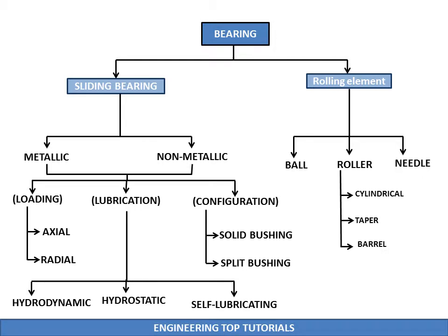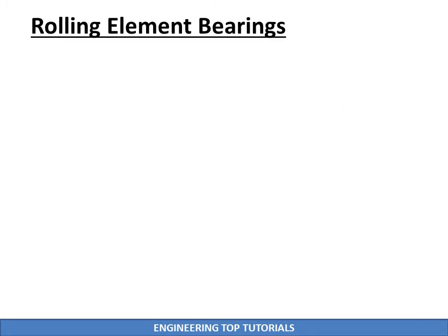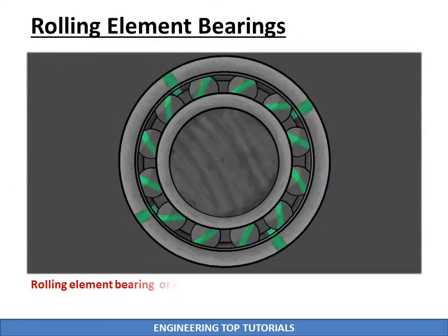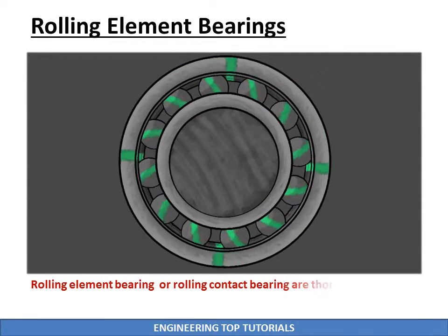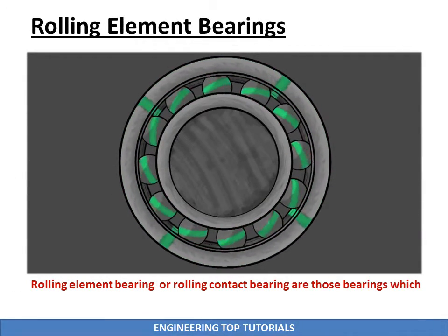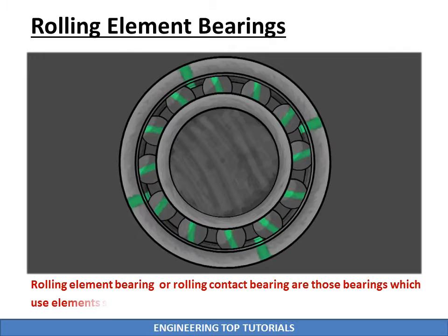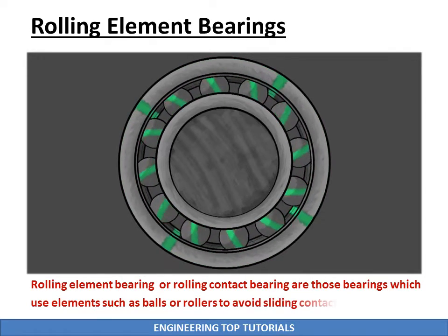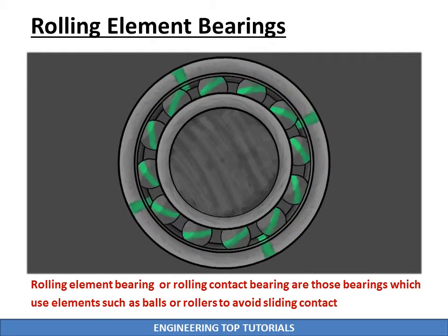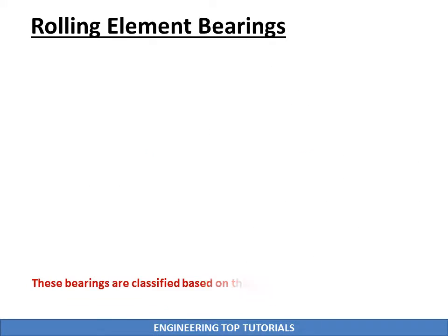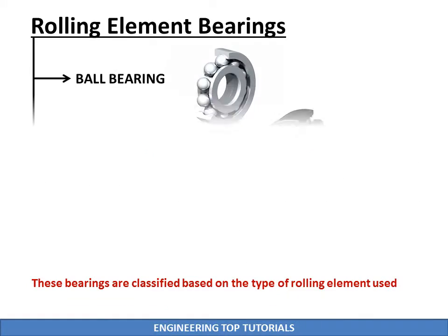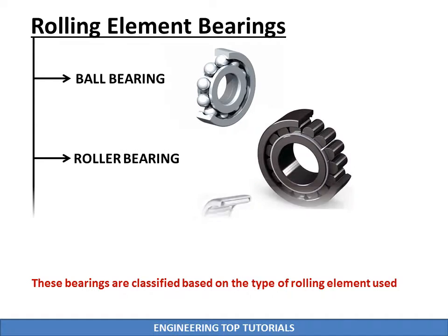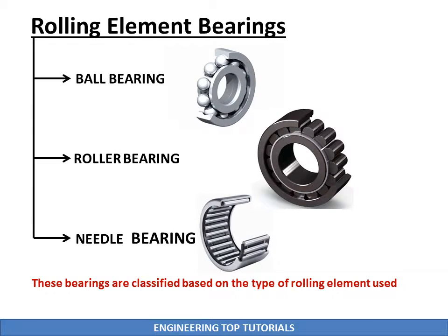In this tutorial we are going to discuss the rolling element bearing. Rolling element bearings, or rolling contact bearings, are those bearings which use elements such as balls or rollers to avoid sliding contact. These bearings are classified based on the type of rolling element used.